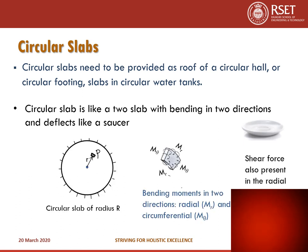Consider a point P on a circular slab at a distance r from the center. At this element, there are two kinds of bending moments: M_R, the radial bending moment causing stresses in the radial direction, and M_theta, the circumferential bending moment causing stresses in the circumferential direction. Shear force may also be present along the radial direction, though it is not shown in this figure.